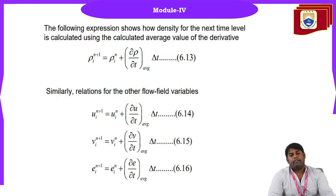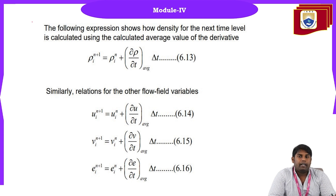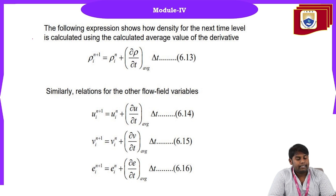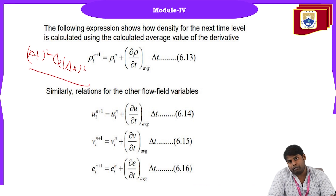We have now recapped the drawback of the Lax-Wendroff technique. To overcome it and achieve higher-order accuracy without the lengthy mathematics, we use MacCormack's method. MacCormack's method shortens the lengthiest procedure of Lax-Wendroff, still achieving O(Δt²) and O(Δx²) accuracy but with only low to medium level arithmetic operations.